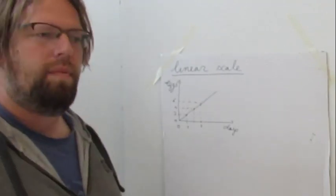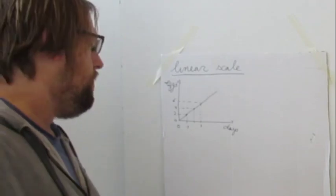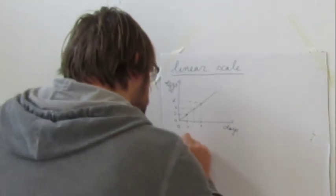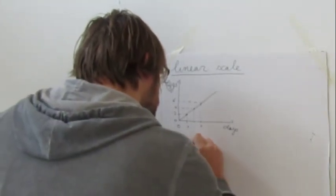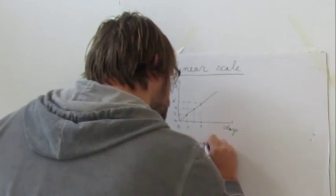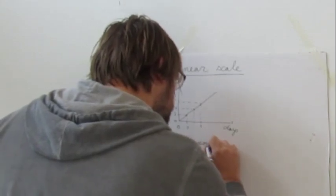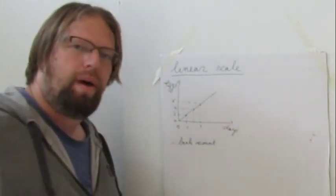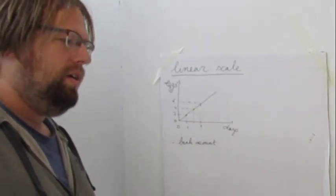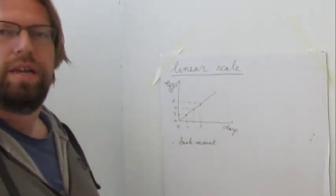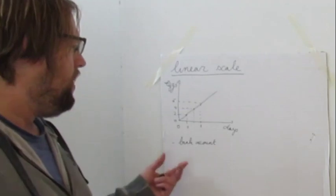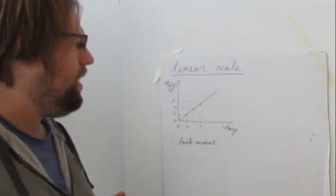So this is the example of the eggs, but it happens in many other cases. For instance, when you have a bank account. If you have a bank account where you add, let's say on a monthly basis, a fixed sum of money, then it's also a linear increase in money in a bank account.